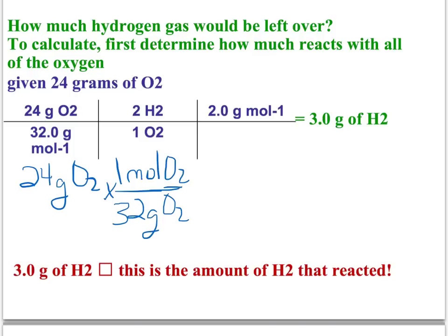And now we have moles of O2. We want to change this to moles of hydrogen, the other reactant. So we say from the balanced equation there's one mole of O2 per two moles of H2. And now we want to change moles of hydrogen to grams.